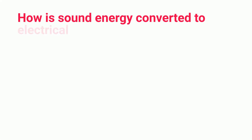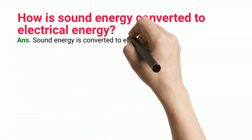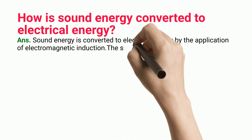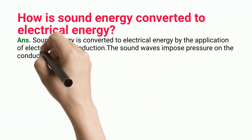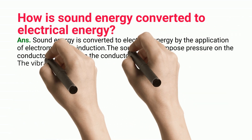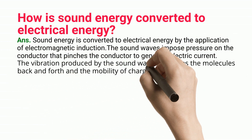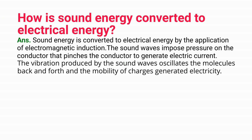How is sound energy converted to electrical energy? Sound energy is converted to electrical energy by the application of electromagnetic induction. The sound waves impose pressure on the conductor that pinches the conductor to generate electric current. The vibration produced by the sound waves oscillates the molecules back and forth and the mobility of charges generated electricity.